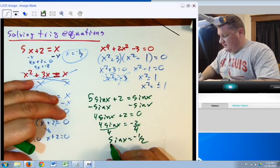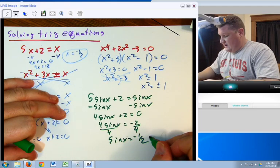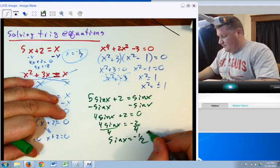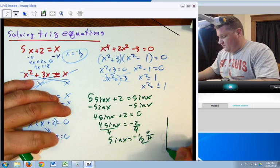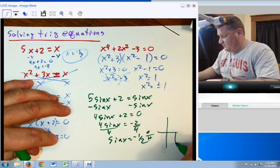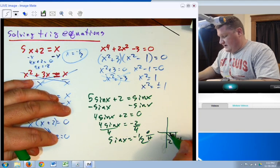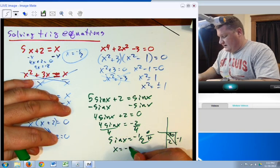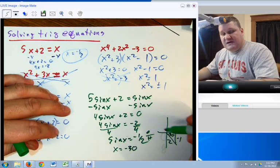Well, where is sin x equal to negative 1 half? Well, sin is opposite over hypotenuse, so let's draw it out. Where is the opposite negative 1 in the hypotenuse to? The answer would be negative 30. So, x equals negative 30 degrees. Now, we need to be careful.